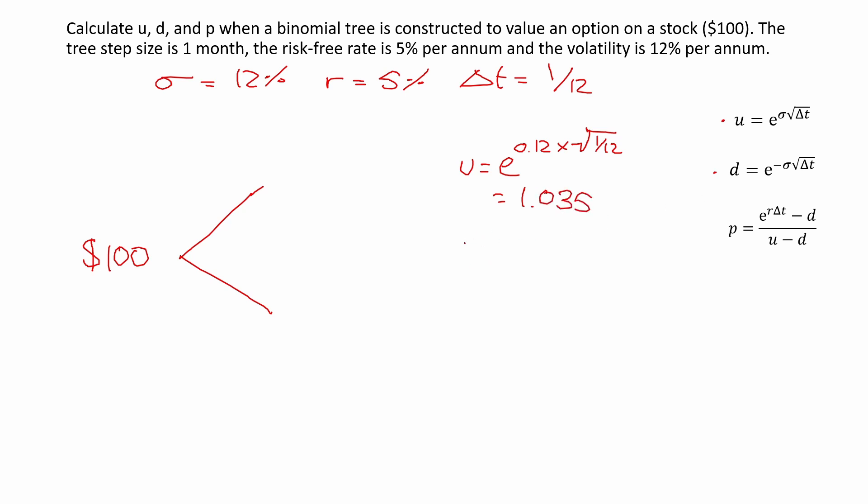We do the same for d. The formula is exactly the same, but there's a minus sigma instead. So this would give us e to the power of -0.12 times the square root of 1/12, and this gives us 0.966.